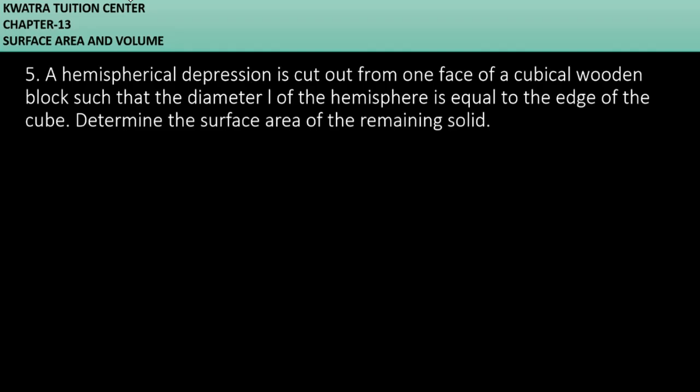Let's start with question number 5. It says a hemispherical depression is cut out from one face of a cubical wooden block such that the diameter L of the hemisphere is equal to the edge of the cube.